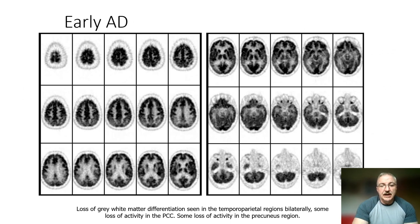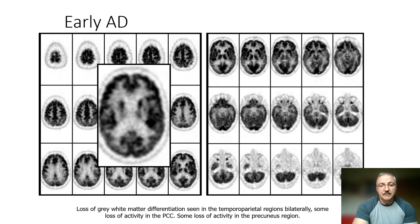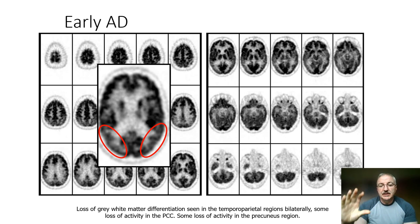Let's see if we can see any difference in an early Alzheimer's disease case, displayed in exactly the same way. At the level of the body of the caudate nuclei, we can see comparatively reduced activity within the right and left parietal lobes. This is mild in that the gyral pattern is maintained, but it is all reduced. We also see reduced activity within the right and left posterior cingulate gyrus; the comparator here is the activity within the thalamus.